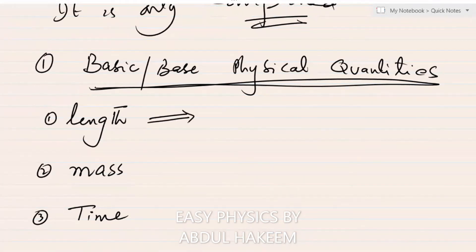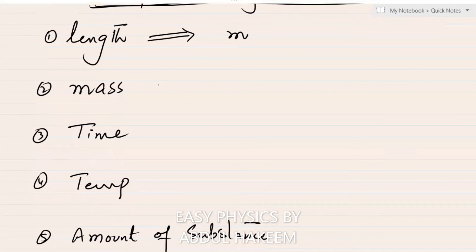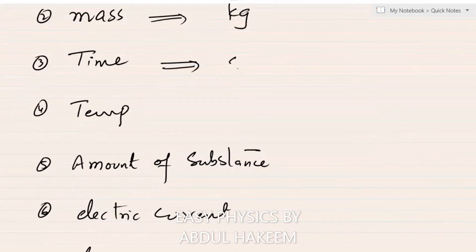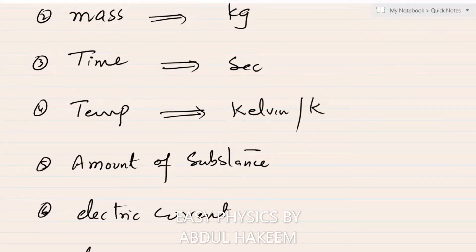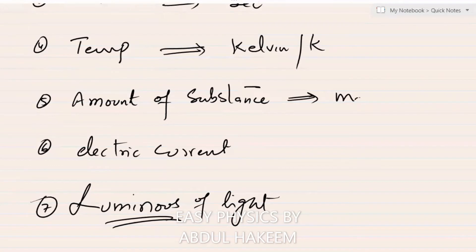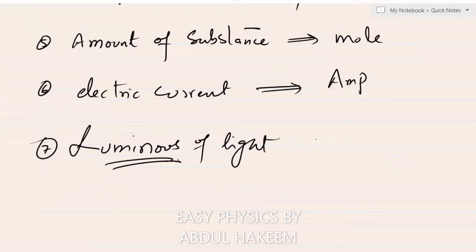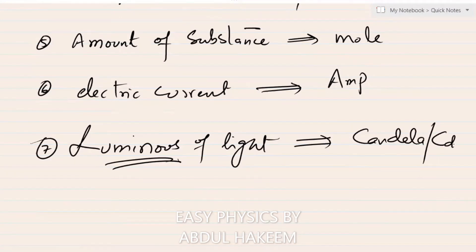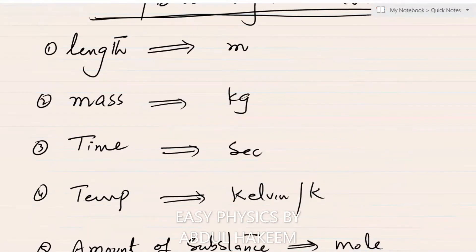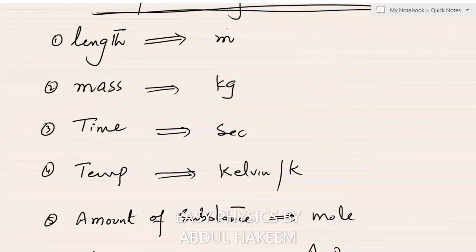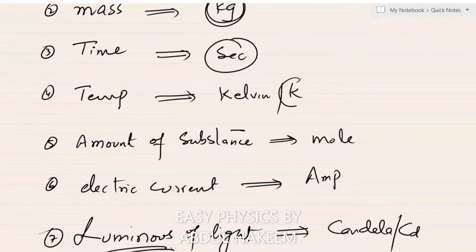Length is measured in metres, mass in kilograms, time in seconds, temperature in Kelvin (K), amount of substance in moles, electric current in amperes, and luminous intensity in candela (cd). These are the seven basic physical quantities, and their units are called base units — so these are seven base units.